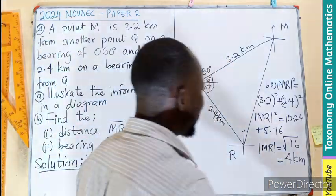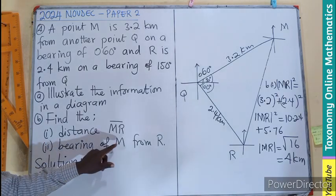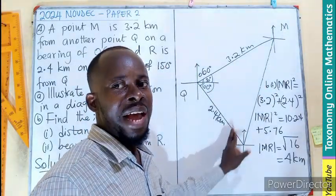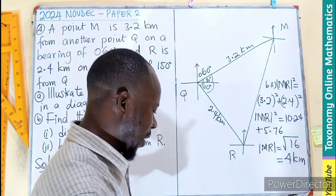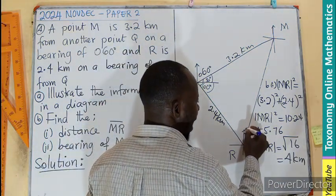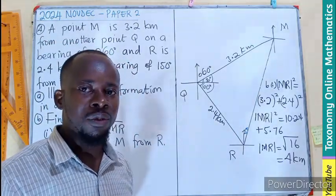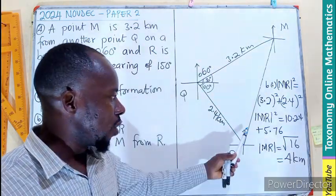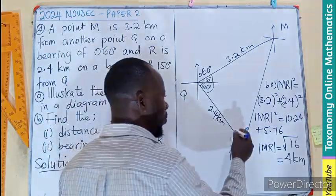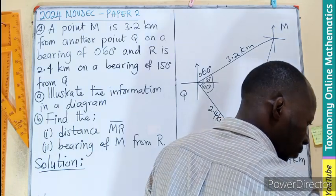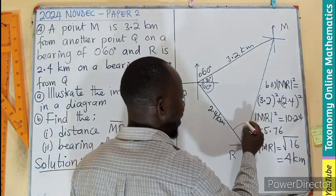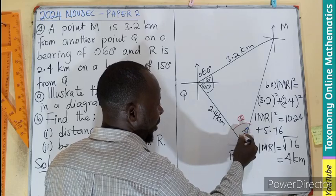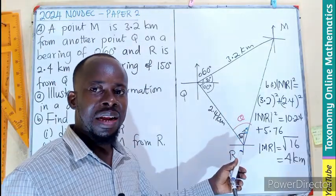For the bearing of M from R, you go to the north of R and measure to meet the line that joins the two. If I measure this, it's going to be alpha. That small angle is what you are looking for, the bearing of M from R. We cannot give value to that angle directly, so we are going to pick the whole of this angle as angle theta. We are aware that the angle here is 30 degrees, so here will also be 30 degrees. So 30 plus alpha gives us theta.